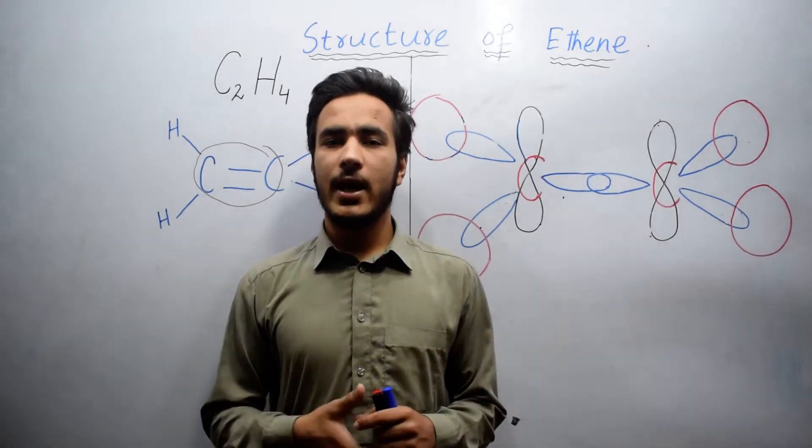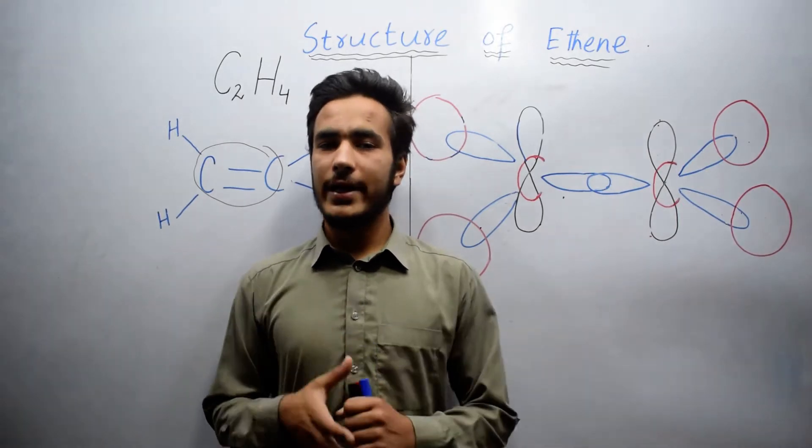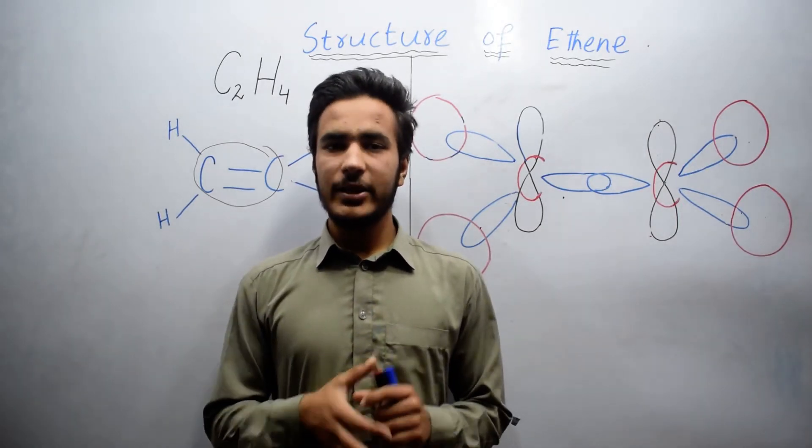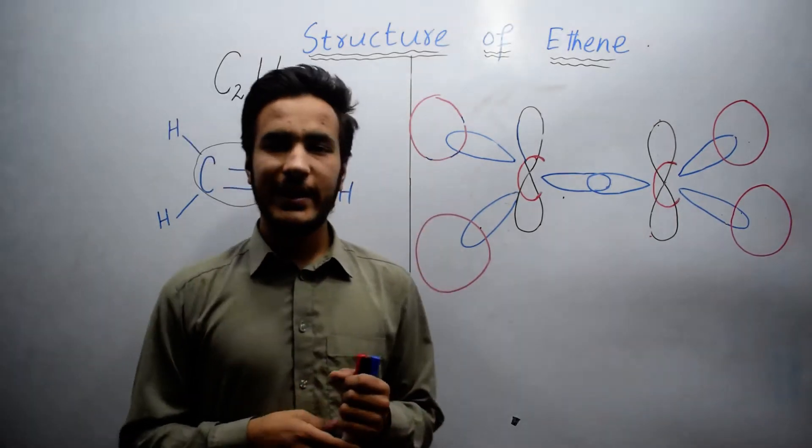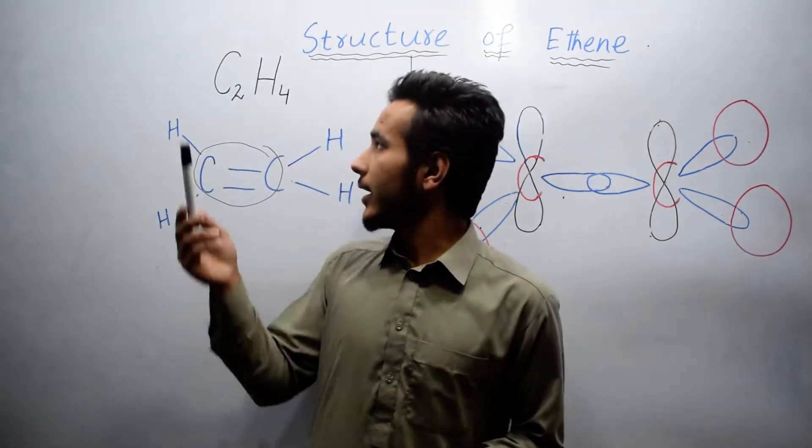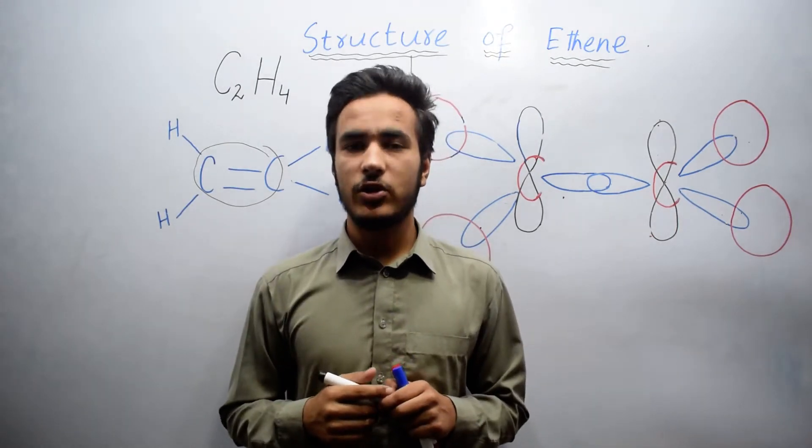Alkenes are unsaturated hydrocarbons in which carbon-carbon bond or double bond. Ethene is the first member of alkene which contains 2 carbon atoms and 4 hydrogen atoms. Let's discuss the structure of ethene.